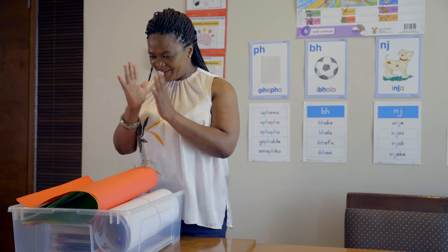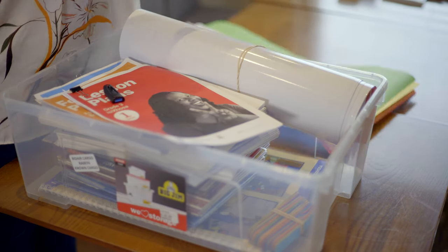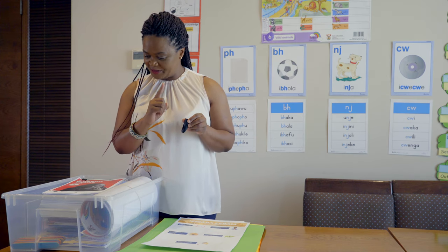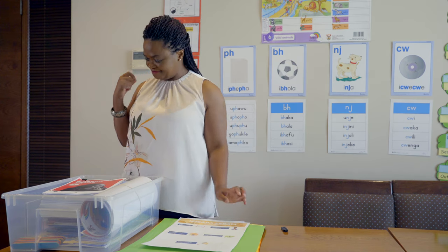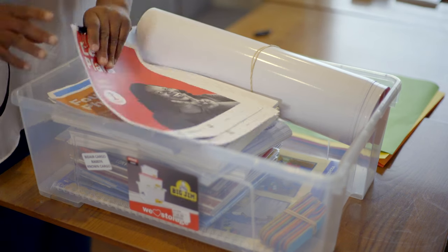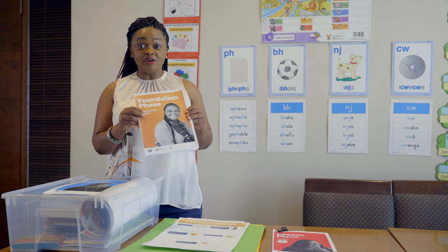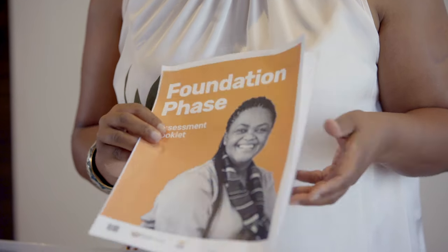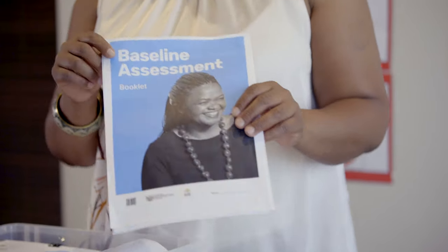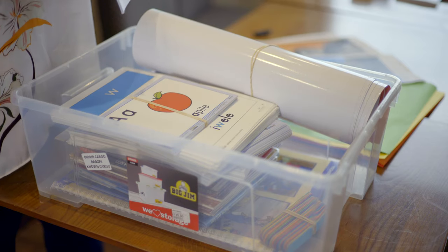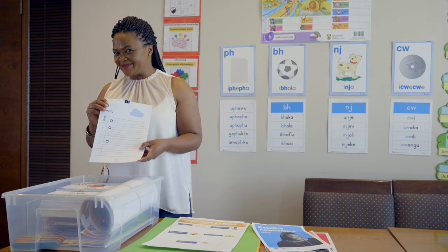For the intervention, we have an LTSM box. Let's see what's in the box — I'm excited! There's a USB and others. There are lesson plans, a scenario A group guided reading booklet, a scenario A baseline booklet, and a handwriting booklet.